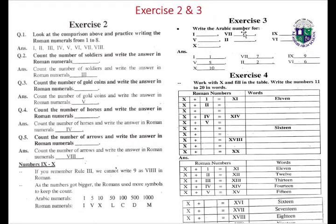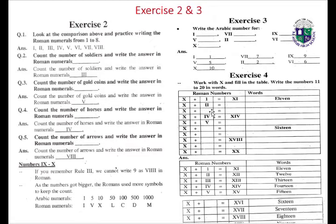Exercise three: write the Arabic numbers — four, one, one, seven, nine, five, two, six, ten, one, seven, nine, five, two, six, and ten. Work with ten and fill in the table. Write the numbers eleven to twenty in words: ten plus one equals eleven, ten plus two equals twelve, ten plus three equals thirteen, ten plus four equals fourteen, ten plus five equals fifteen, ten plus six equals sixteen, ten plus seven equals seventeen, ten plus eight equals eighteen, ten plus nine equals nineteen, ten plus ten equals twenty.